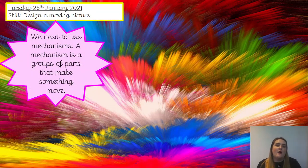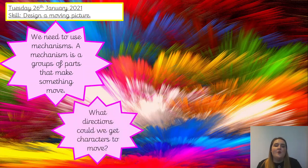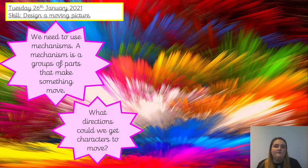In order to get our picture to move, we need to use things called mechanisms. A mechanism is a group of parts that make something move — they work together so that it moves. I want you to think, what directions could we get our characters or objects in our picture to move? Talk to the person next to you or to your grown-up.